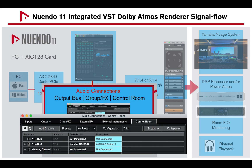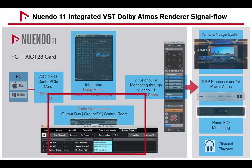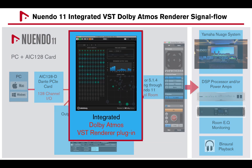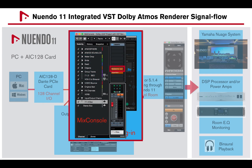Finally, on the Audio Connection Control Room tab, I've created a 7.1.4 monitor connected to the Yamaha AIC128 output ports. A new Nuendo 11 integrated Dolby Atmos VST renderer plug-in should be inserted pre or post fader on the main output bus — in this example the 7.1.4 main output channel.